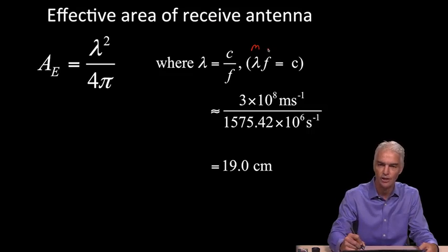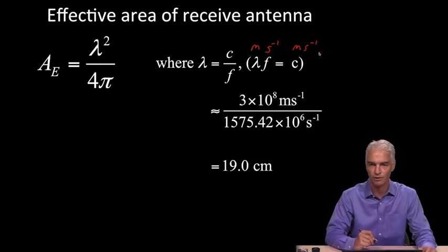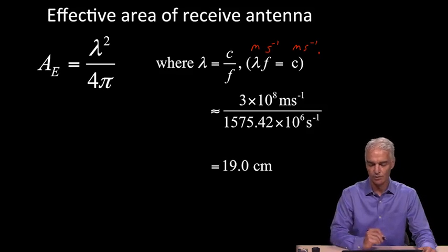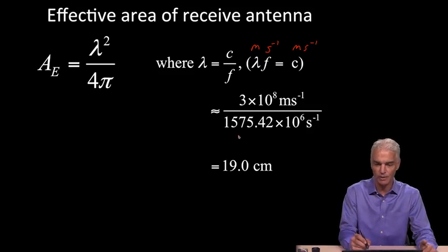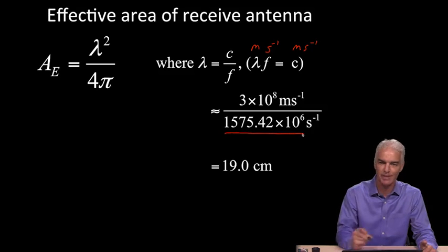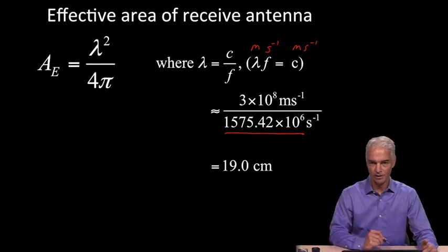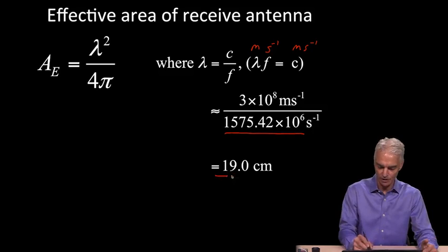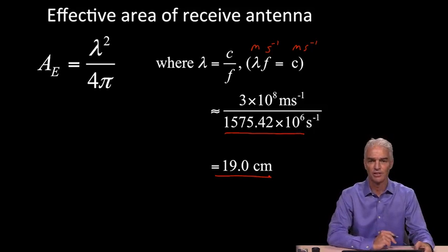The wavelength would be in meters. The frequency would be in hertz, which is seconds to the minus one. So meters times seconds to the minus one, which is the same thing as speed, meters per second. You make sure you have your formula right. λf = c, λ = c/f. Plug in the value, speed of light, the L1 frequency of GPS. This is one of the few things you really have to remember, 1575.42 megahertz. Plug in those values, you see that the wavelength is 19 centimeters, and that gives you the effective area of the GPS antenna, of the GPS receive antenna.